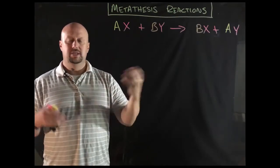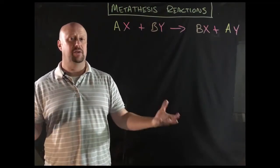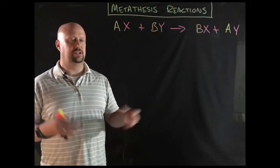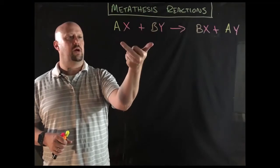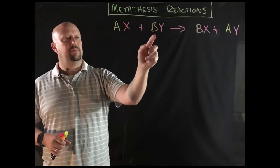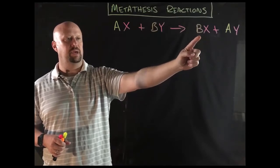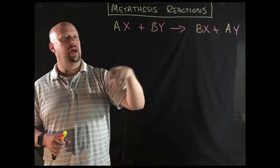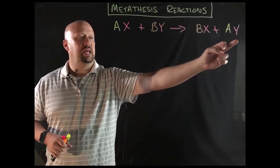And so what's going to occur then in the metathesis reaction is that we're going to swap the places of the cations. Now, some professors might tell you they're swapping the places of the anions. It really doesn't matter that much. I've always done it as swapping the cations, so I'm just going to continue in that vein. The cations are going to swap places, and then that means we're going to end up with B with X, so cation B with anion X. And then that's going to leave us with cation A with anion Y.